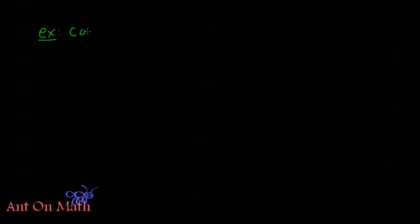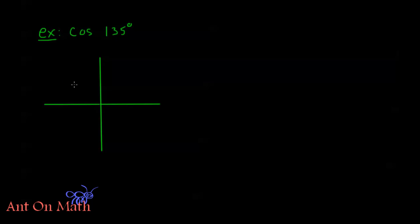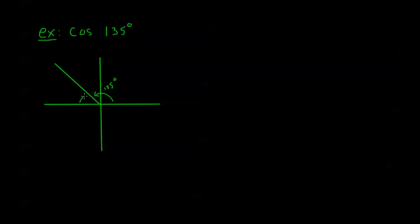Let's say we want to find cosine of 135 degrees. If I draw my XY plane, 135 degrees ends up being about right here. Now notice that if I were to go all the way to the X axis, I would have an angle right here of 45 degrees.